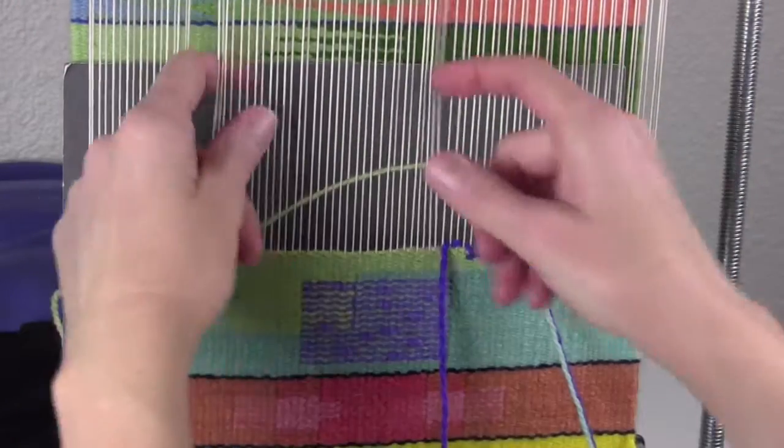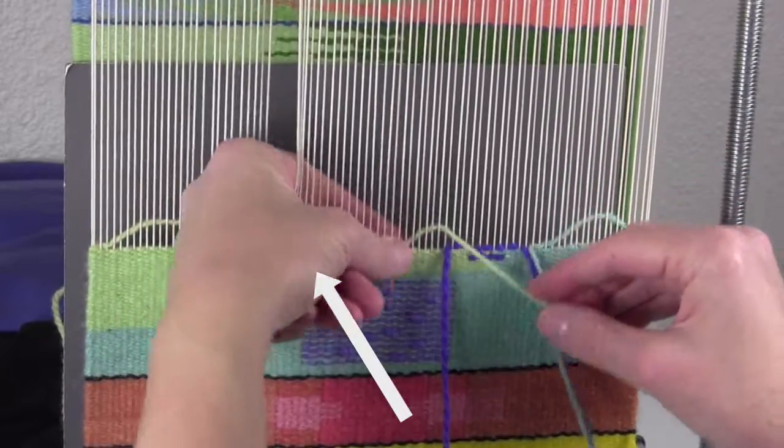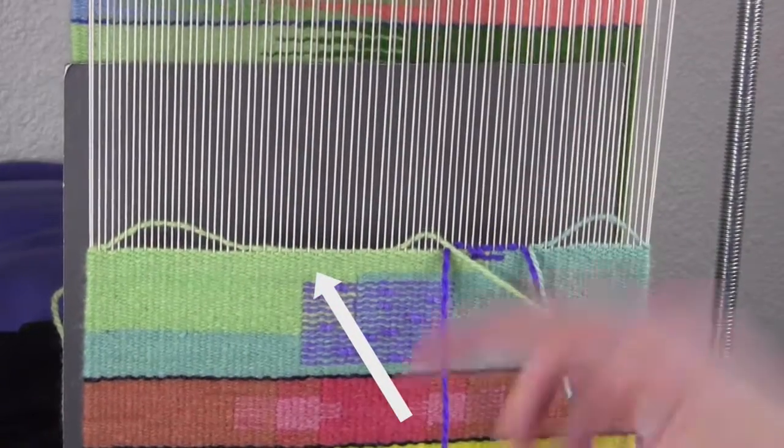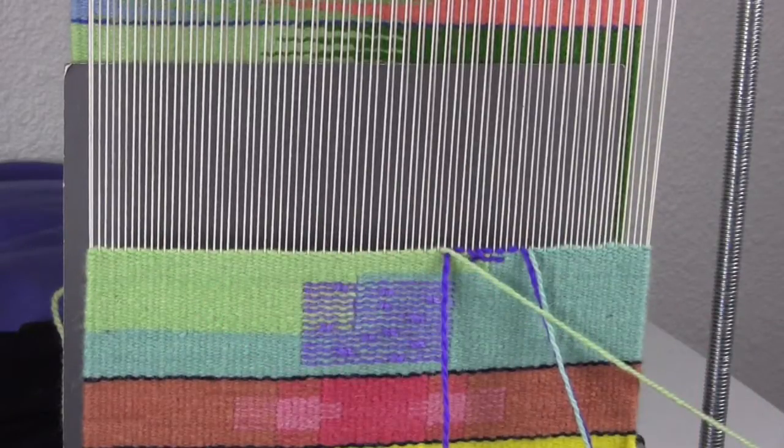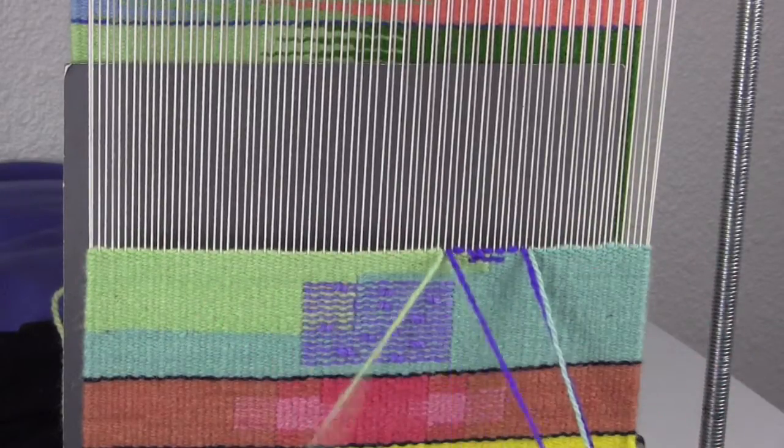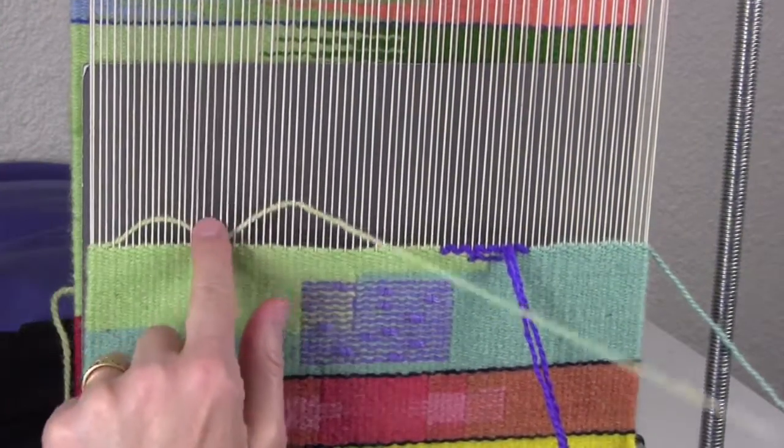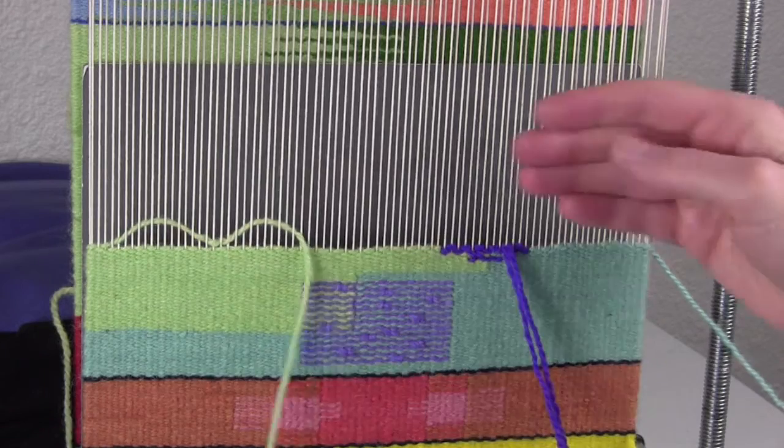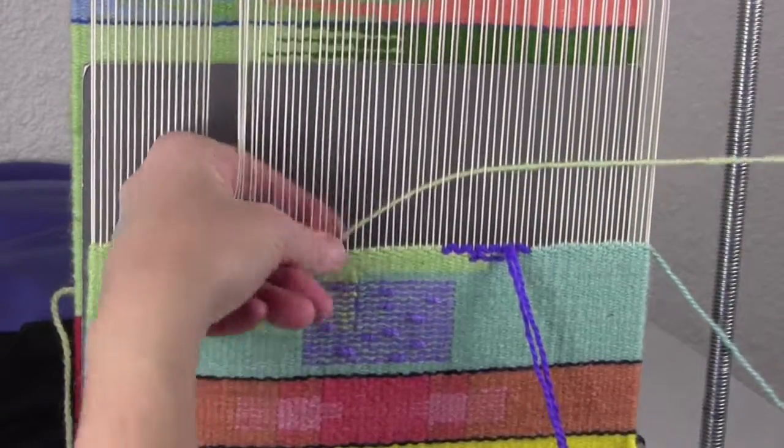Notice here how I'm really flattening my bubble out and making the line go straight across to try to pull those warps back together. And I'm doing it again on the very next pick and every pick thereafter until the problem is solved.